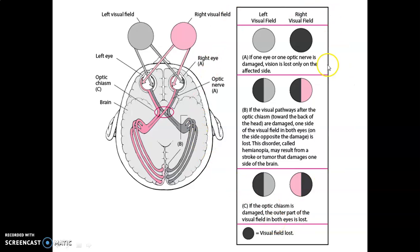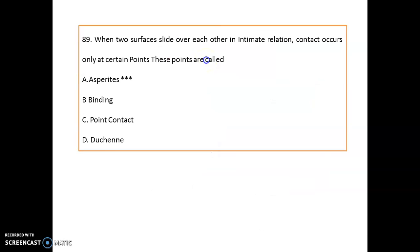When two surfaces slide over each other in intimate relation, contact occurs only at certain points, and these points are known as asperities.